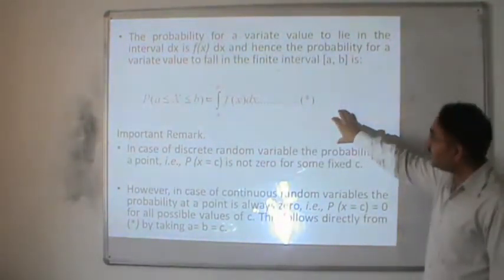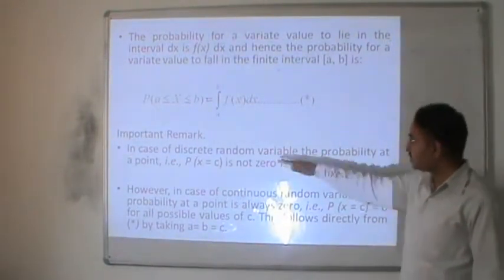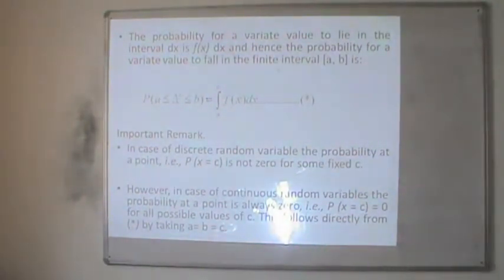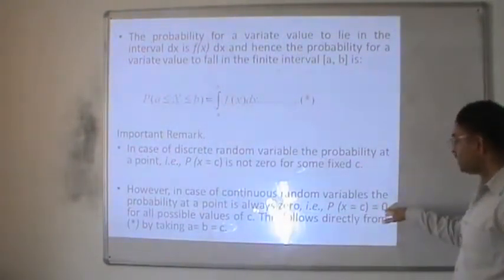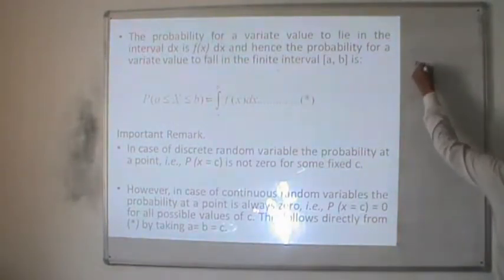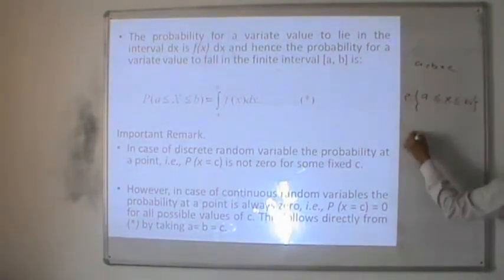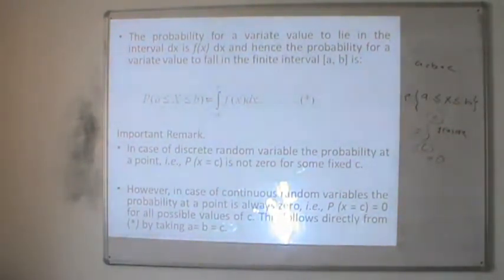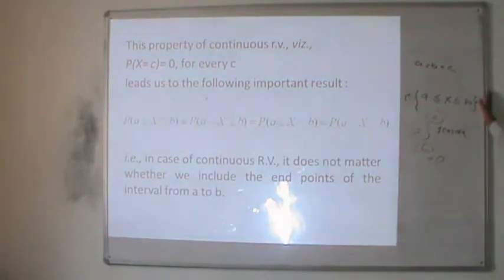An important remark comparing discrete and continuous random variables: in the case of a discrete random variable, the probability at a point is not equal to zero for some fixed value c. However, in the case of a continuous random variable, the probability at a point is always zero — that is, probability of x equals c is 0. If we put a equals b equals c in the integral from a to b of f(x) dx, we get the integral from c to c, which is always zero because the upper and lower limits are the same.